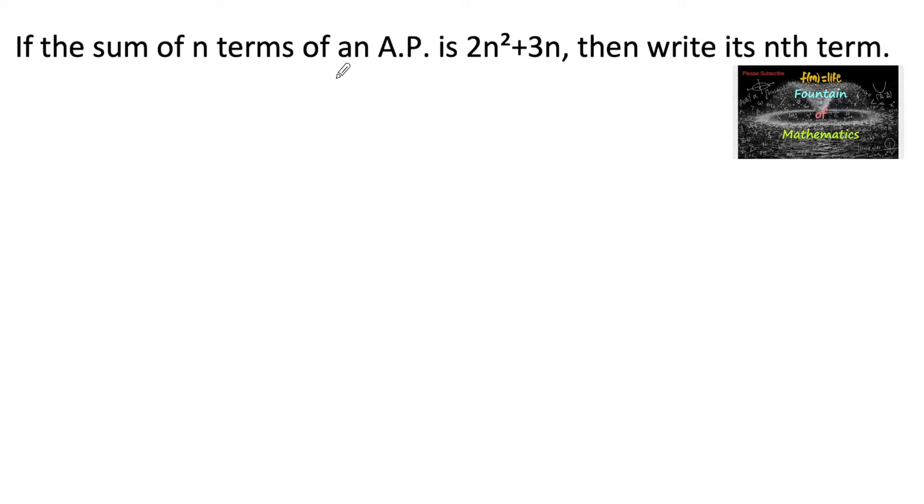If the sum of n terms of an AP (arithmetic progression) is 2n square plus 3n, then write its nth term.